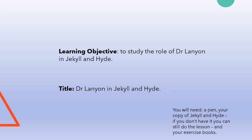You're going to need a pen, your copy of Jekyll and Hyde — if you don't have it you can still do the lesson — and your exercise books. In a couple of weeks time we might be doing Zoom lessons, so I'm very excited about that; be nice to see you all again. No dates on that yet though. Get the title onto your piece of paper, underline it, and we'll press on with the lesson.